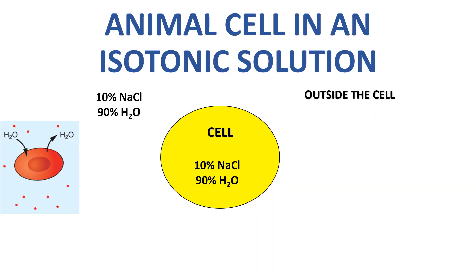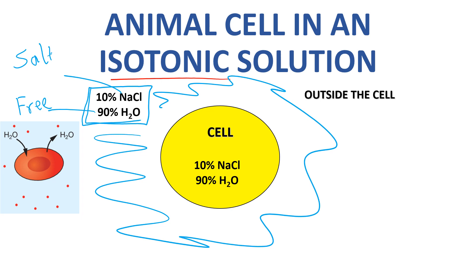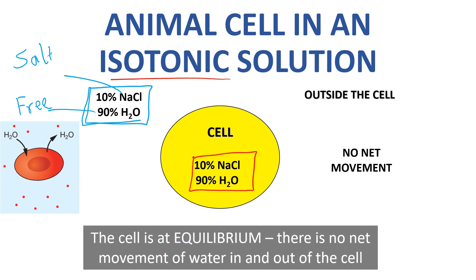These three scenarios have a huge impact on what actually happens to a cell. A red blood cell is the classic animal cell example. If we put an animal cell into an isotonic solution we've got an equal amount of solute in and out. For example, 10% sodium chloride outside means 90 free water molecules, and inside the cell it's also 10% sodium chloride and 90% water. In isotonic solution there's no net movement of water in or out — the cell is in equilibrium.